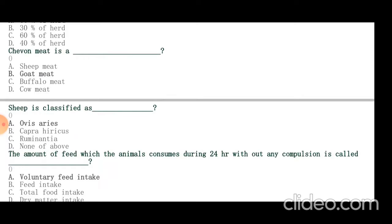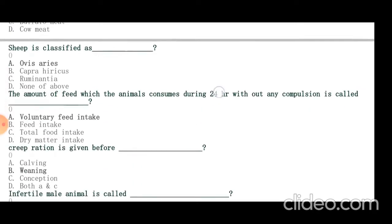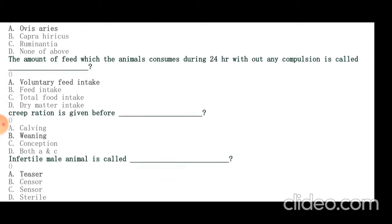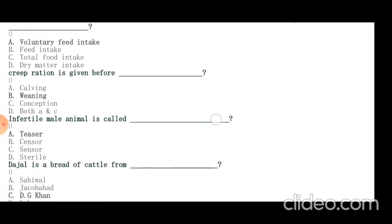The amount of feed which the animal consumes during 24 hours without compulsion is called voluntary feed intake. Creep ration is given before weaning.